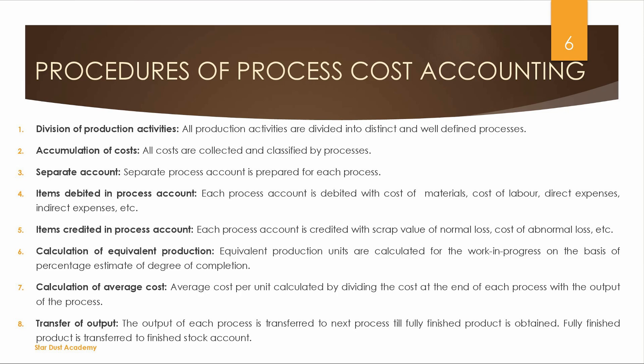Next is calculation of average cost. The average cost per unit is calculated by dividing the cost at the end of each process by the output of that process. The output of each process is transferred to the next process until the fully finished product is obtained and transferred to the finished stock account.